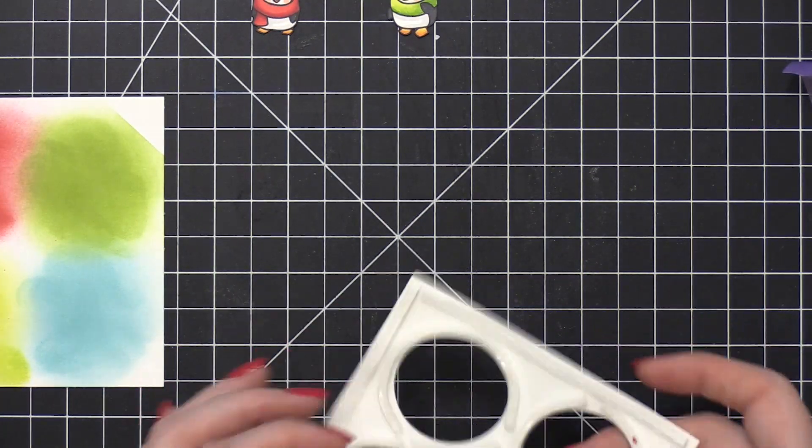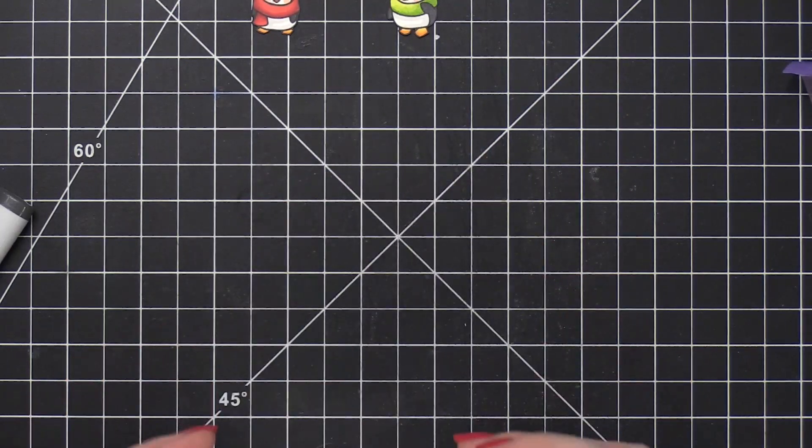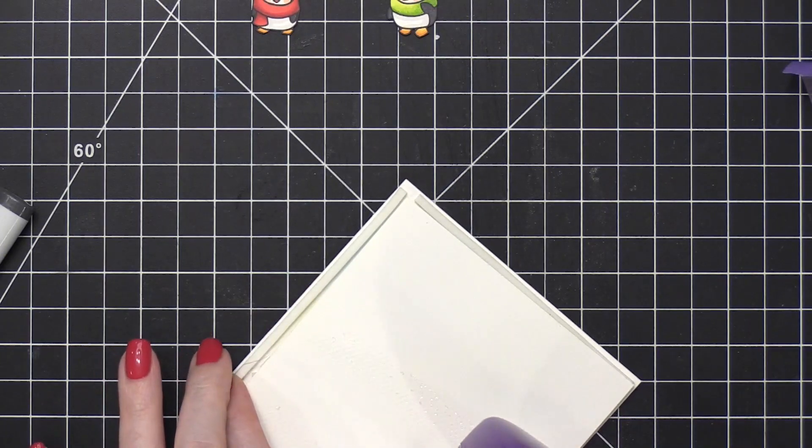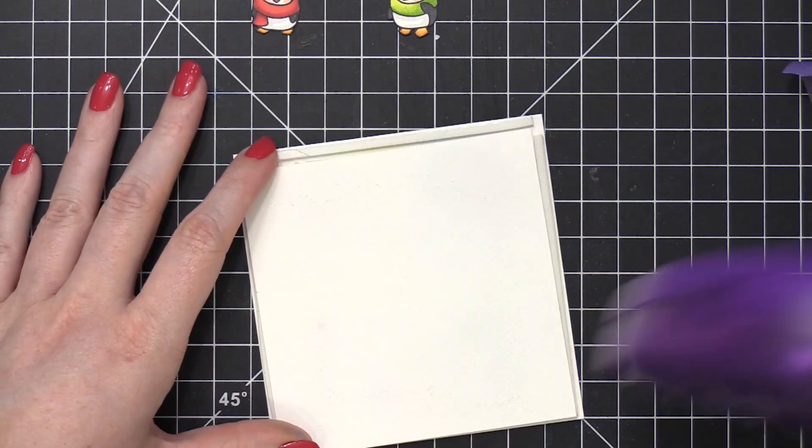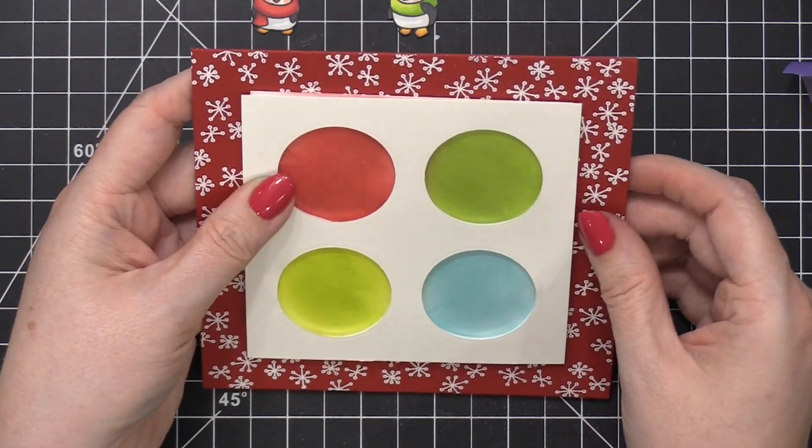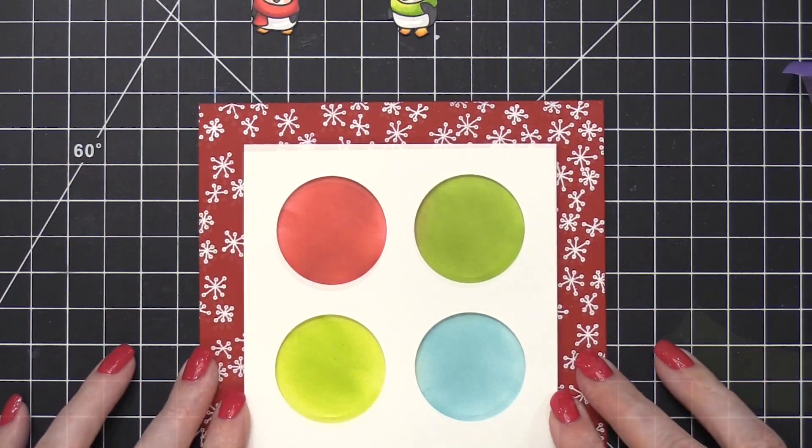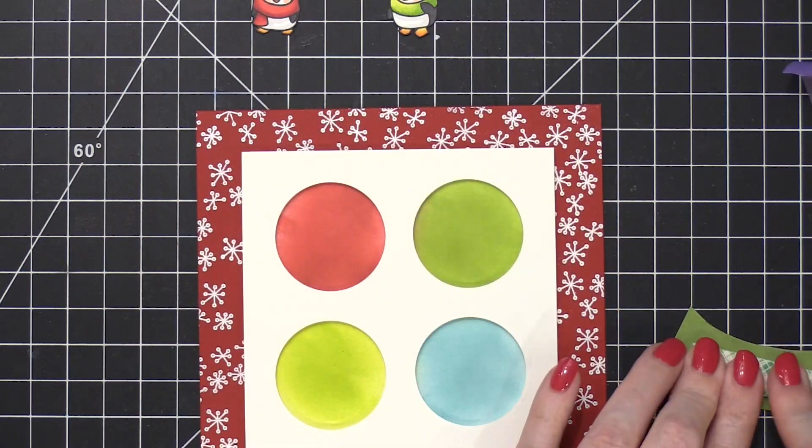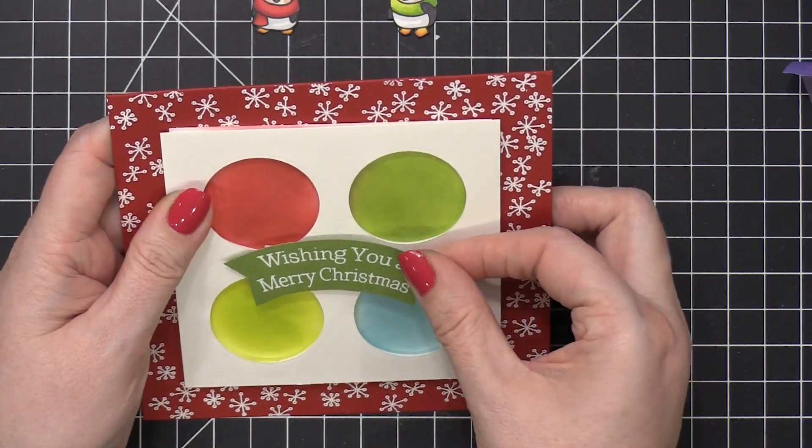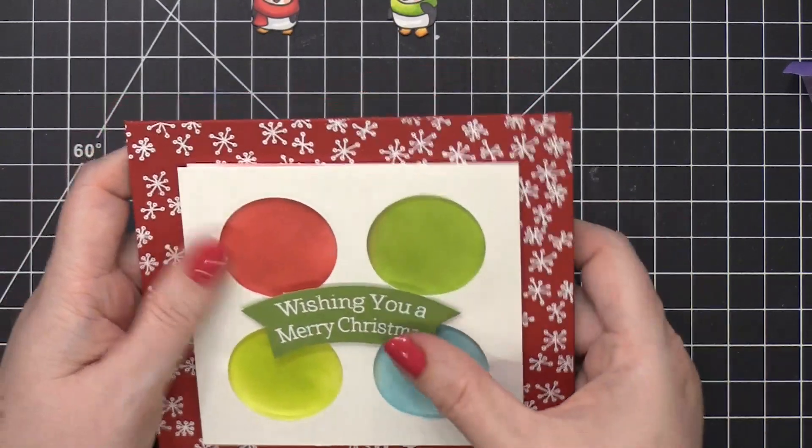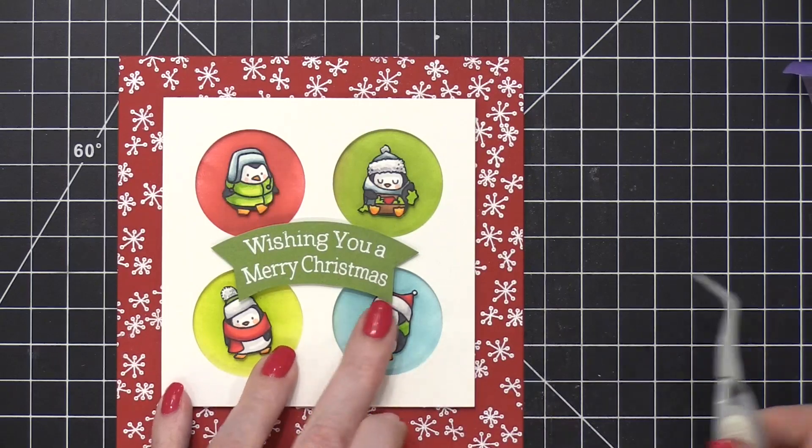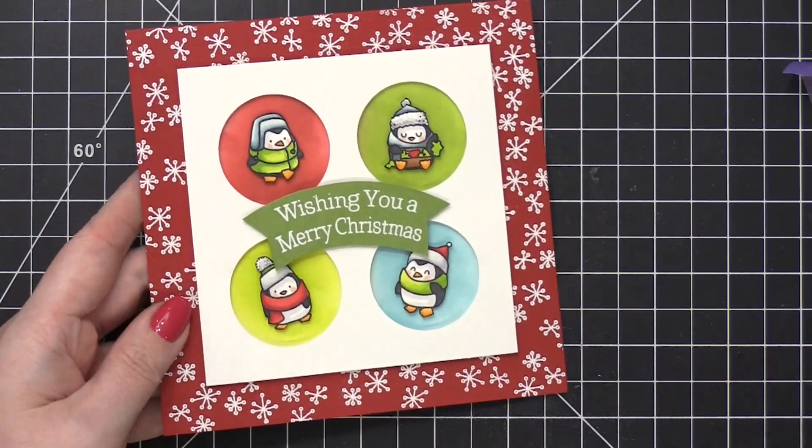I then took some narrow foam strips from Darice and put those around the circle frames and also around the outer edges and then placed it over the top. And then putting some Xyron Mega Runner adhesive on the back and then placing that directly onto the front of the card. So you could also make this into a shaker card this way. I think it would look really cool. I decided to keep mine very simple and just have those windows giving a little bit of dimension. Put my banner right over the center in the middle of all those windows. And then I put some foam adhesive behind the penguins and then placed them directly into those little circle windows.